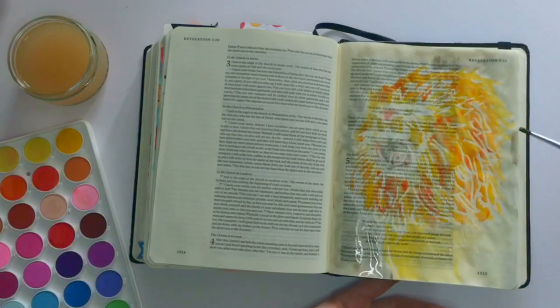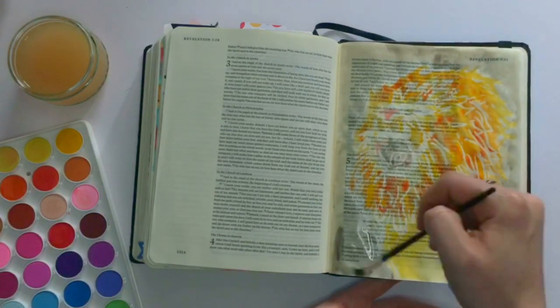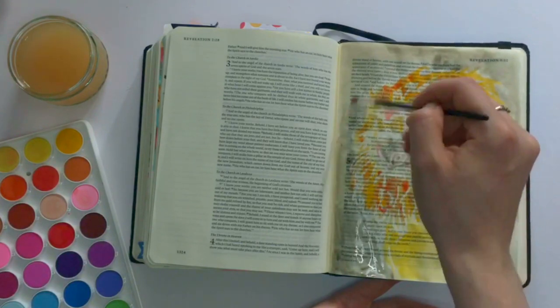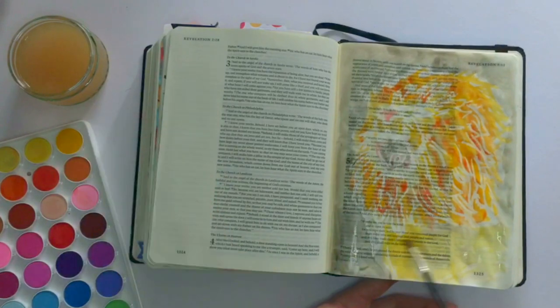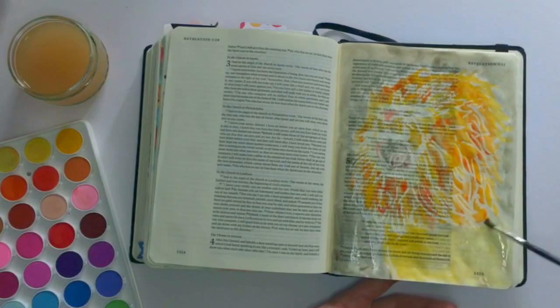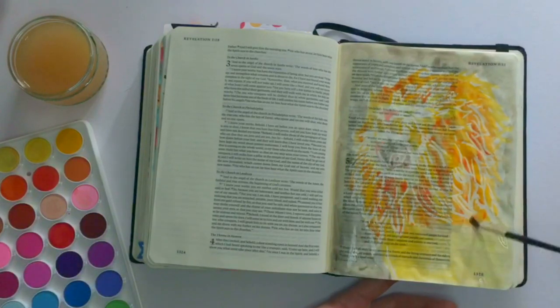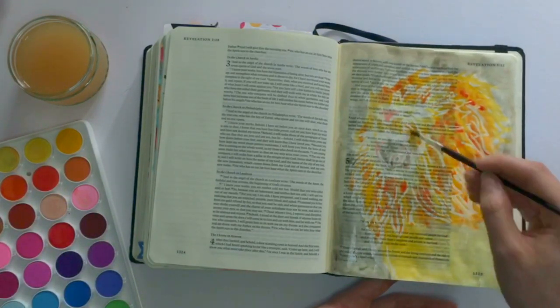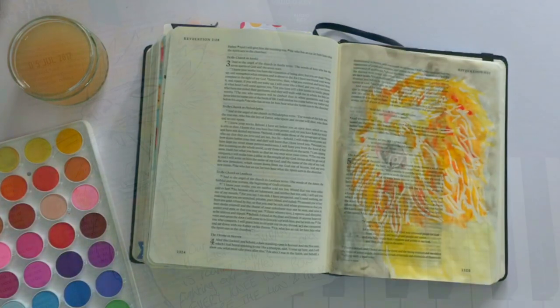So really the point of this technique isn't that you go out and buy loads of new products and loads of new resources. That's not the reason why we're in the word and that's not the reason why we're spending time journaling in our Bibles. So you could do this technique with just a plain wax crayon that you've got lying around like I did, or you could do it with a birthday candle, or if you've got some of that peel-off watercolor masking fluid you can use that as well, but you really don't need it.